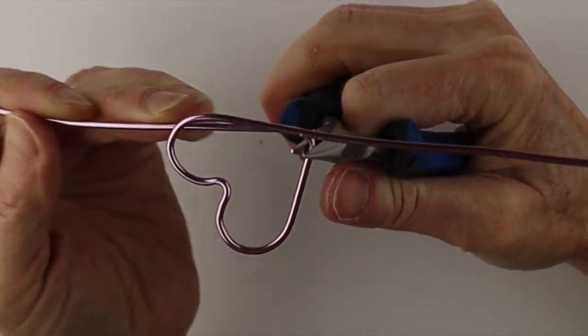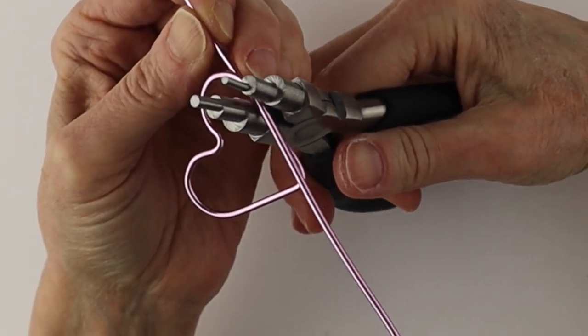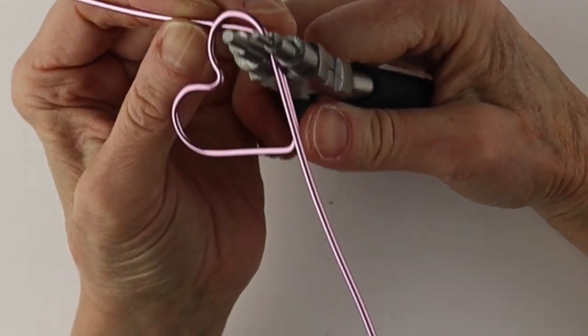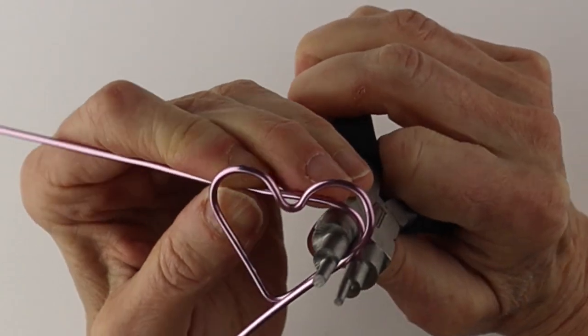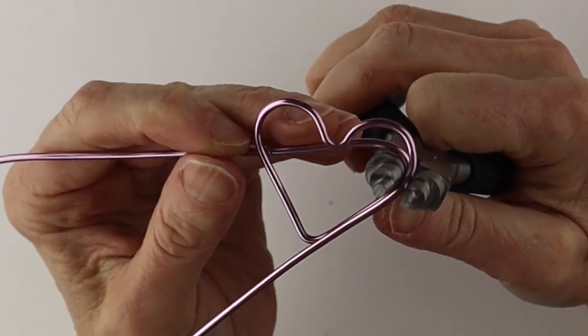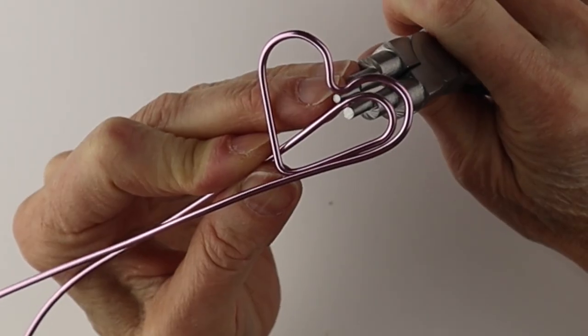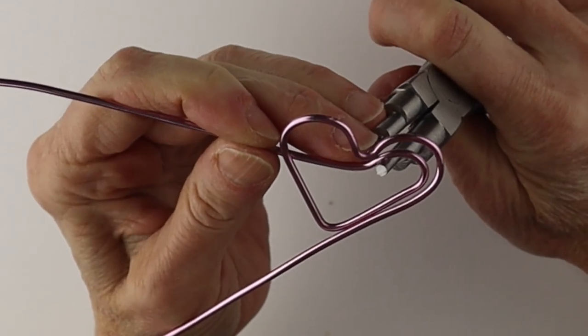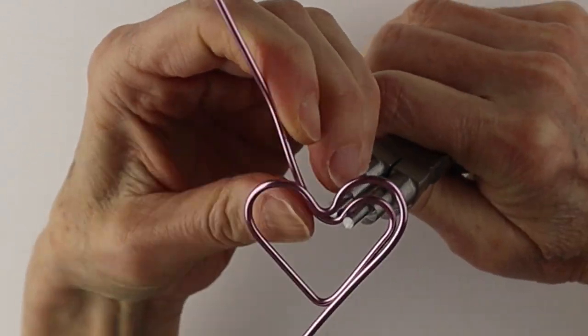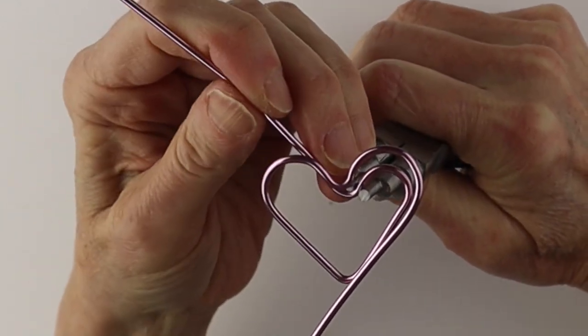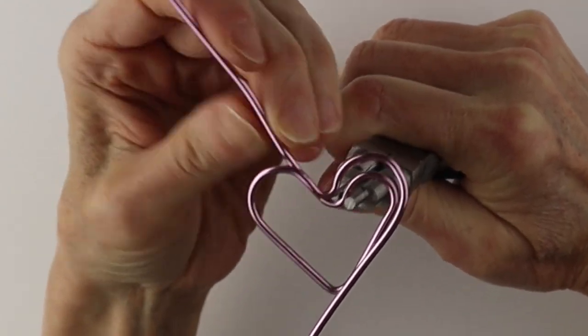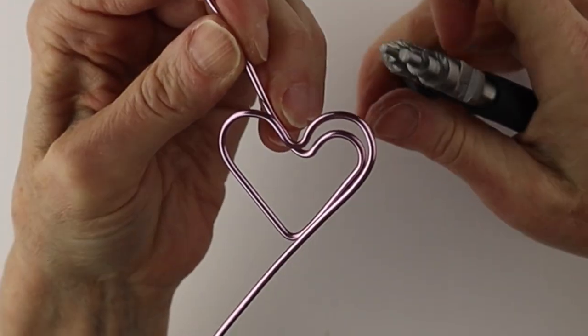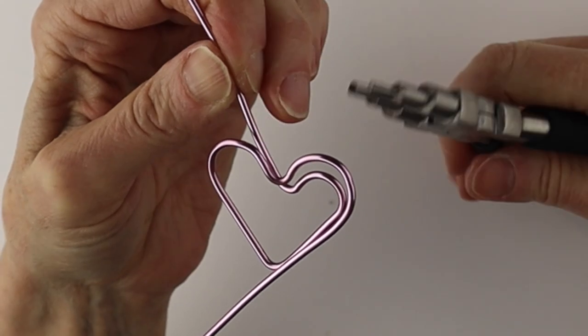Now what we're going to do is echo the shape of the heart so get your looping pliers again, go to a smaller size loop. Bring it around and then up like that. This is a fun design. It works well. It's sort of like a paperclip style and you can also make bookmarks like this.